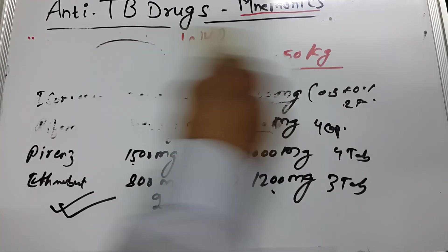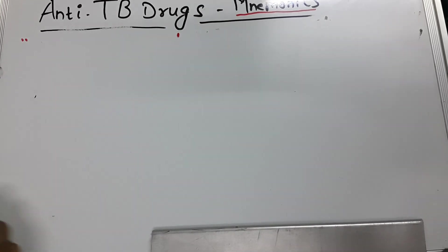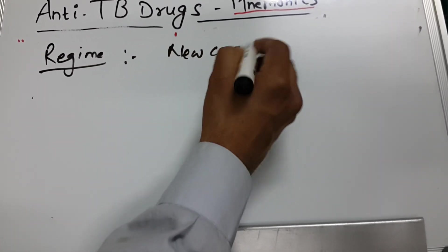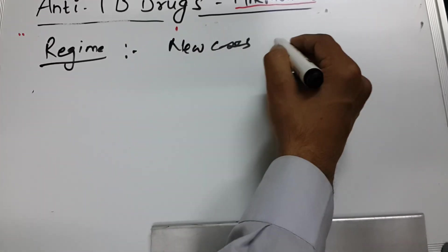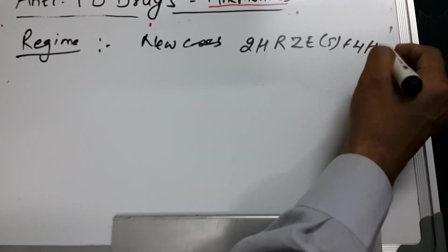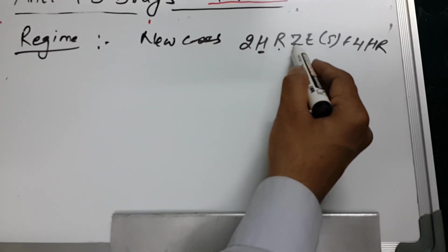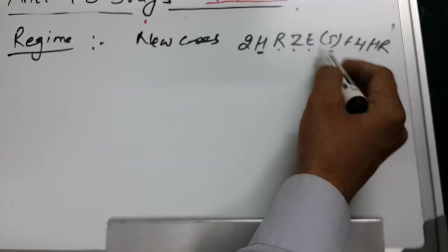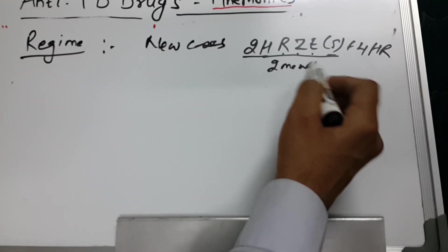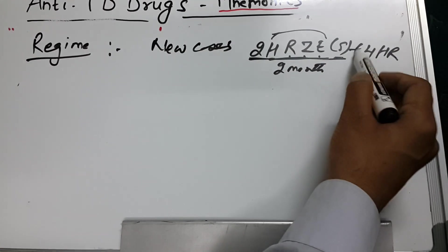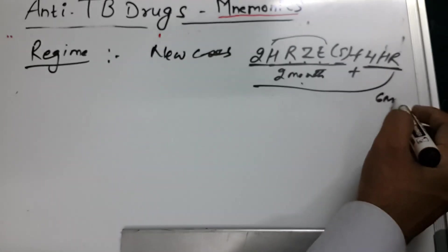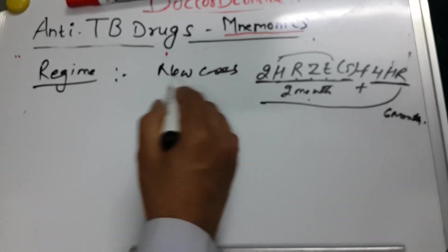Now for treatment regimens: for new TB cases, the regimen is 2HRZE + 4HR. This means for the first 2 months, give Isoniazid, Rifampicin, Pyrazinamide, and Ethambutol. Streptomycin may be substituted for Ethambutol. Then for 4 months, give only Isoniazid and Rifampicin. Total duration is 6 months.